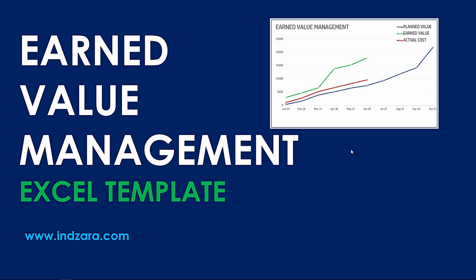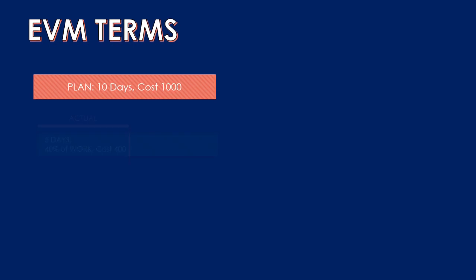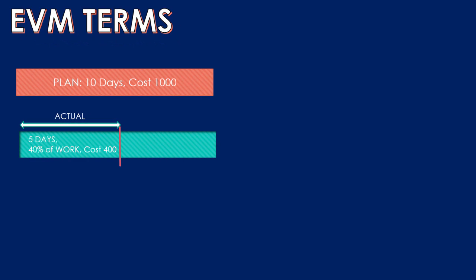Let's get started with a very simple example to help us understand how earned value management can be helpful. Consider an example project in the planning stage: according to our plan it is going to take 10 days of work and cost 1000. After planning, we begin the project and after five days of actual work we have completed 40% of the work and it has so far cost 400.